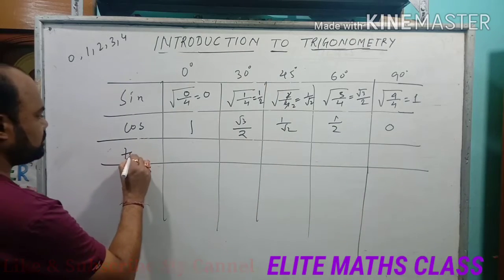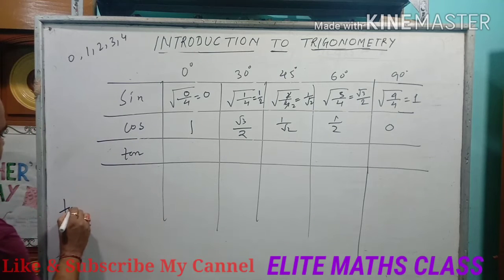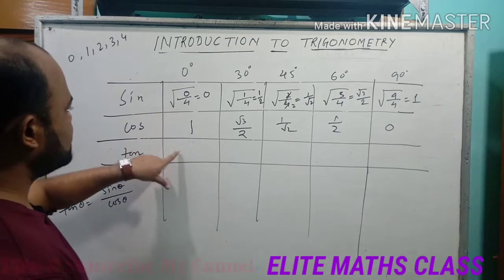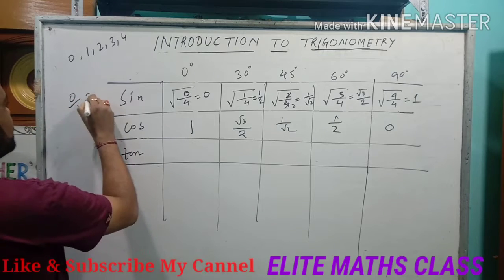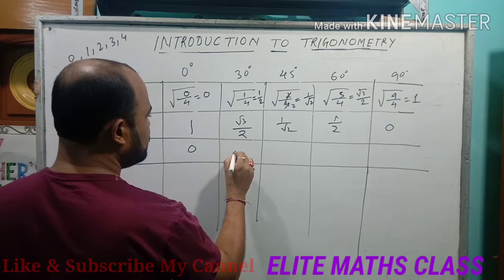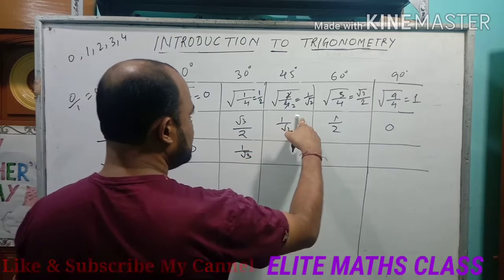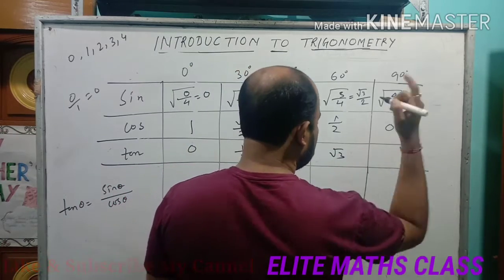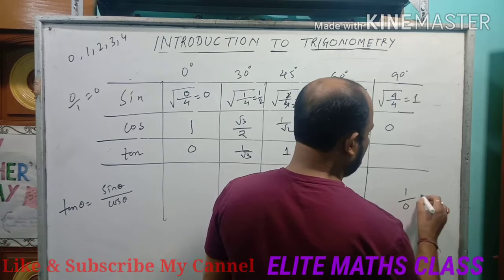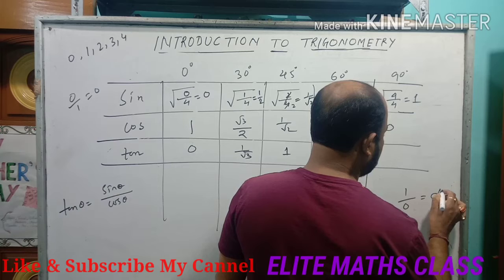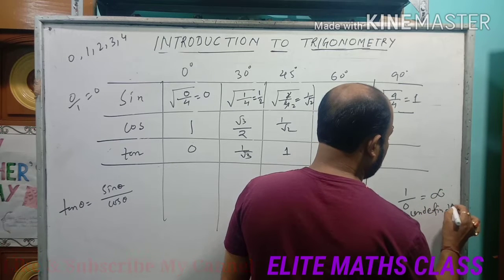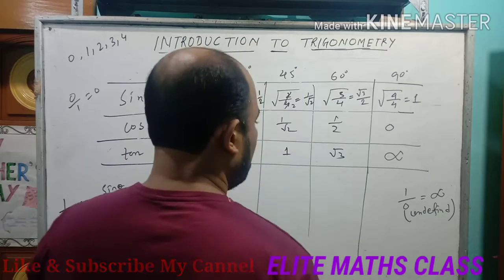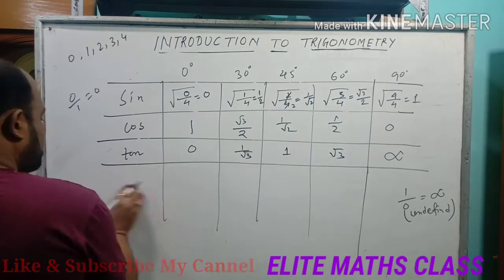Next is tan. The relation is tan θ = sin θ / cos θ. So: tan 0° = 0/1 = 0; tan 30° = (1/2)/(√3/2) = 1/√3; tan 45° = (1/√2)/(1/√2) = 1; tan 60° = √3; and for 90°, the value is sin/cos = 1/0, which is undefined — written as infinity. So we have the values of tan.